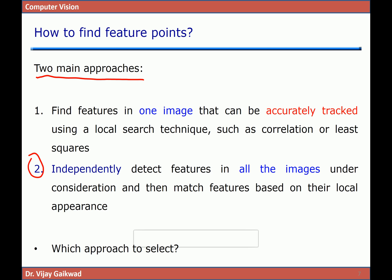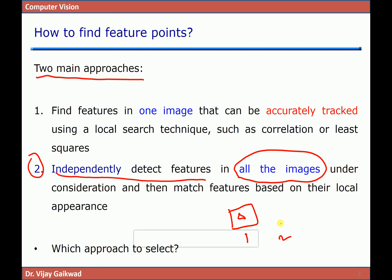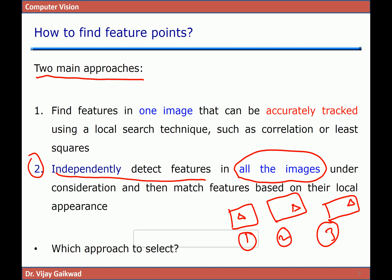The second approach is to independently detect the features in all images under consideration and then match features based on their local appearance. For example, I have image one and find my object of interest; I have image two and find features using my feature library; I have image three and find my object there. In images one, two, and three, independently I apply my algorithm and feature detector to find the object of interest, with no reference between images. This is a per-frame estimation approach.